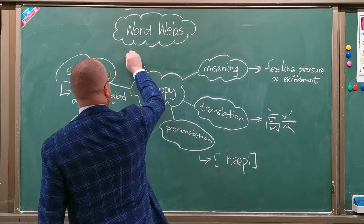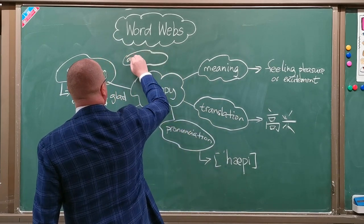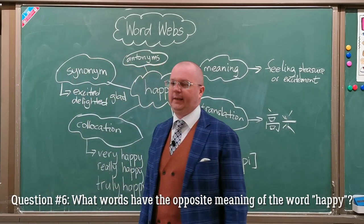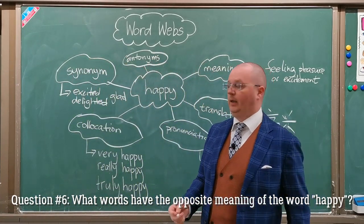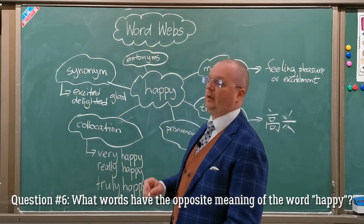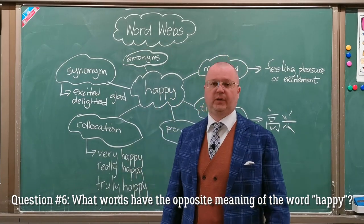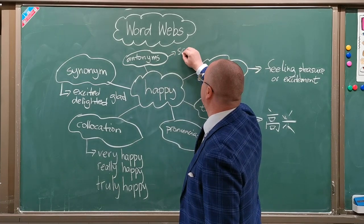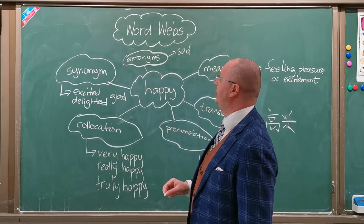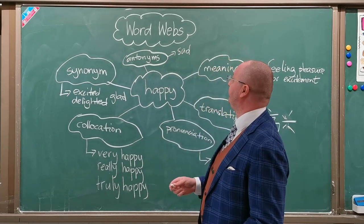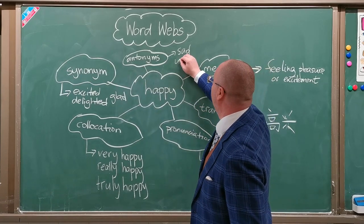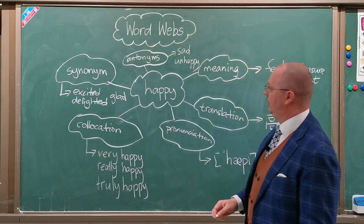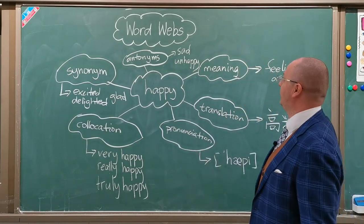Next would be antonyms. Antonyms are words that have the opposite meaning. So in this case, what is the antonym of 'happy'? This would be 'sad,' or for example 'unhappy.' And also I'm running out of space to write.